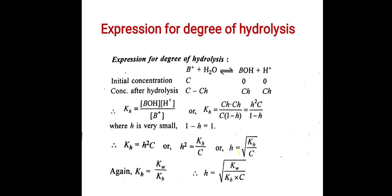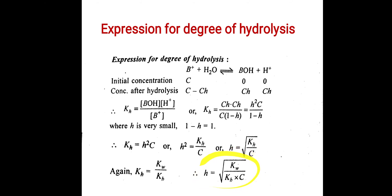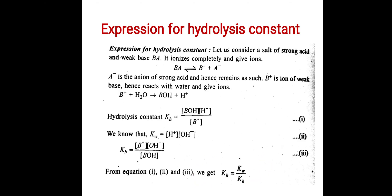Taking the square root gives H equals the square root of KH over C. We derived earlier that KH equals KW over KB, so substituting this value we get H equals the square root of KW divided by KB times C. This is our expression for the degree of hydrolysis of a salt of strong acid and weak base.